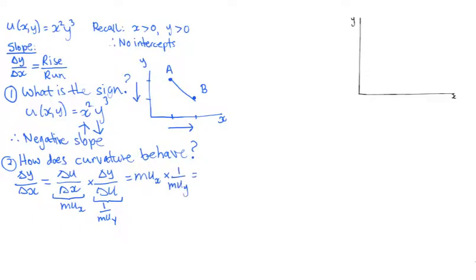So when you put this together, the rise over run is really just the marginal utility of x divided by the marginal utility of y.